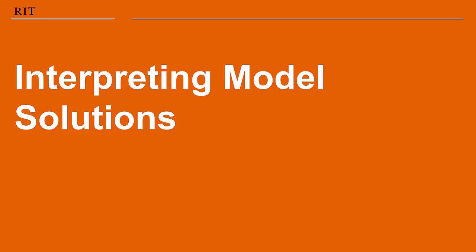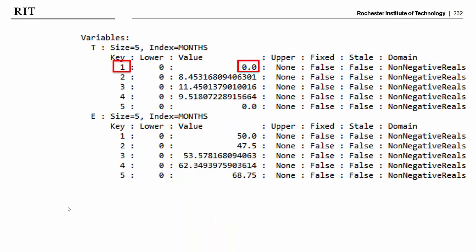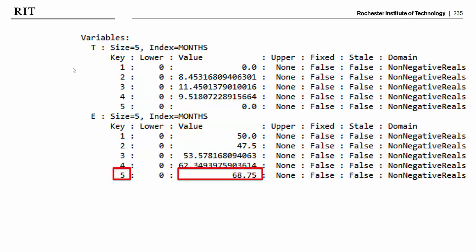And then real quick, interpreting the model solutions, if we had pressed run in Spider, we would get some output that looked like this, where this top section talks about our variables, the middle section gives our objective function value, and then the lower part talks about our constraints. So if we look at this in a little more detail, the variable section first provides all the optimal values for our t or our training variables. So we see, for example, that in month one we should train zero employees, but in month four we should train 9.52. And then the value for our experienced technicians are captured over time, so in month one we have 50, just as we expected. And then in month five we end up with a final total of 68.75 experienced technicians on staff.